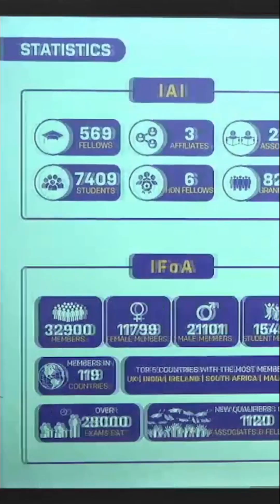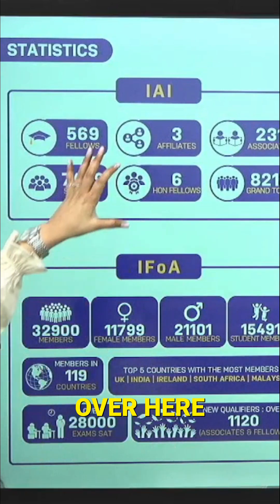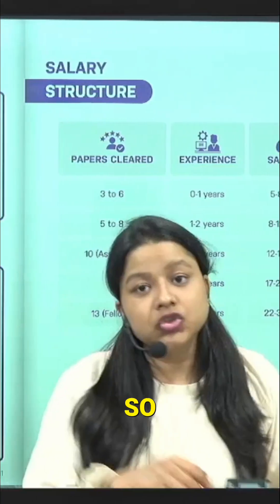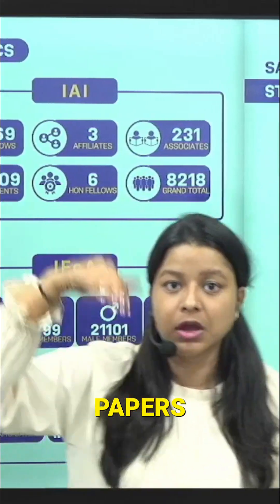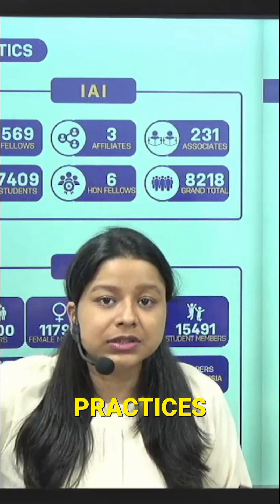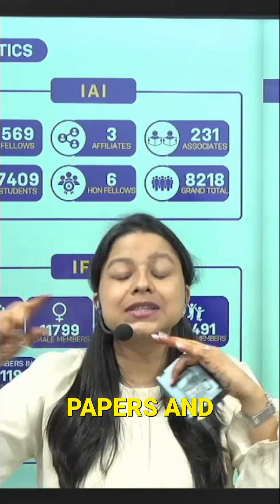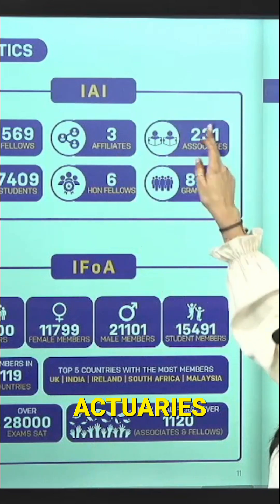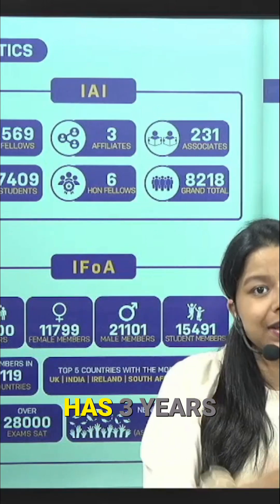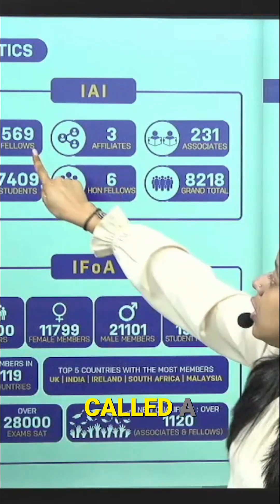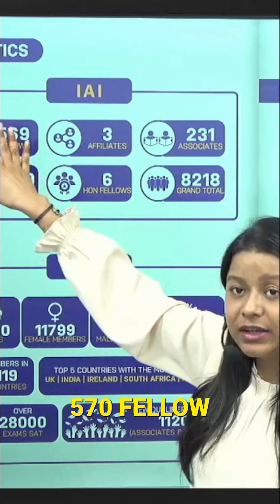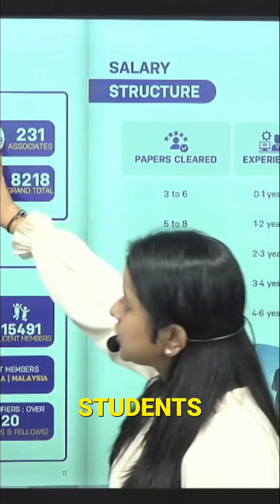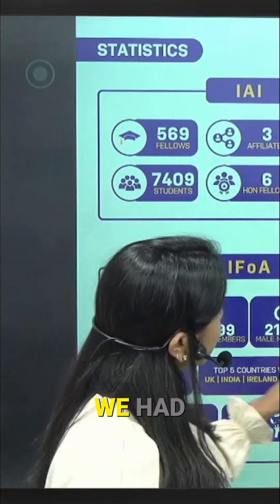Next let's talk about basic statistics. IEI currently has approximately 570 fellows. A fellow is anyone who completes all 13 papers and has 3 years of relevant work experience. Anyone who completes the first 10 papers — all the core principles and core practices, which are the CM, CB, and CP papers — and has 2 years of work experience becomes an associate actuary. In case of IFOA, the number is 231. You can have a look at how many students are currently enrolled. This report may vary as it was prepared 6 months back and numbers might have changed recently.